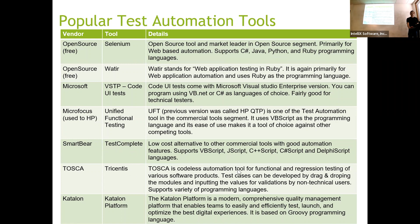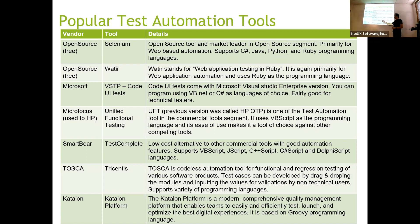Tosca is a codeless automation tool — you don't need to learn any programming. But it is very expensive. UFT used to be very popular, but it's going away from the market because there are so many free tools out there. Companies don't want to pay $2,500 to $3,000 per QA for a license.